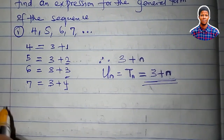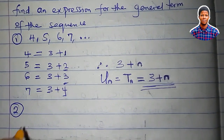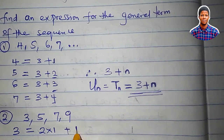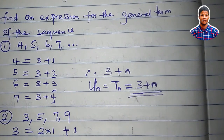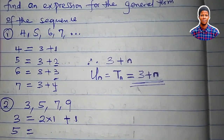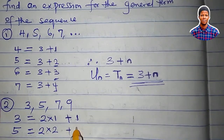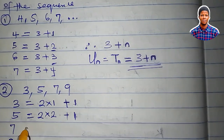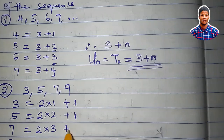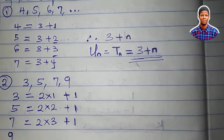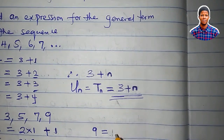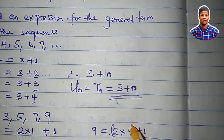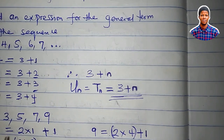Let's check some other examples. I want to find the general term of the sequence 3, 5, 7, 9. 3 is equal to 2 times 1 plus 1, which gives 3. 5 is equal to 2 times 2 plus 1, which gives 5. 7 is equal to 2 times 3 plus 1, which gives 7. 9 is equal to 2 times 4 plus 1, because 2 times 4 is 8, and 8 plus 1 is 9.